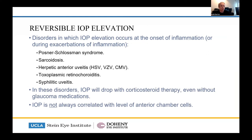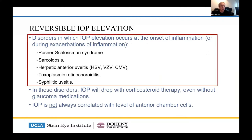There are some disorders where IOP elevation occurs at the onset of inflammation — you treat the inflammation and it gets better, so it's not always due to steroid response. This includes Posner-Schlossman syndrome, sarcoid, herpetic disease, toxoplasma, and syphilis. In these conditions, treating with corticosteroids actually brings the pressure down, and it's not always correlated with the level of anterior chamber inflammation.